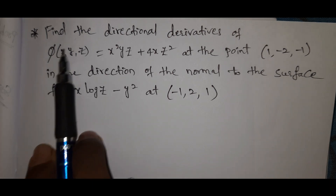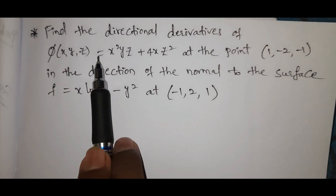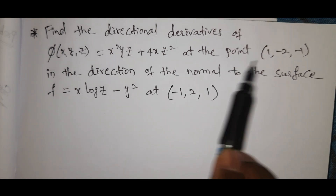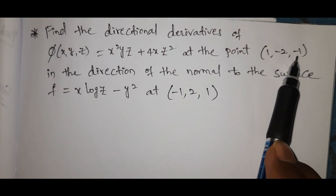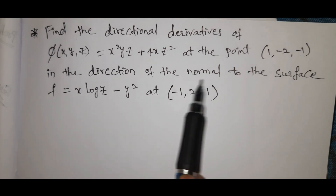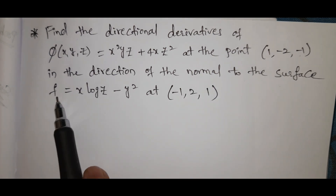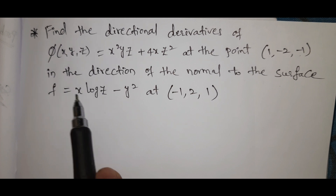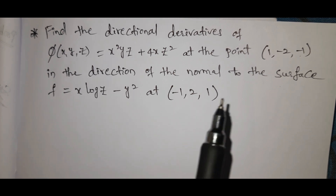Find the directional derivative of φ equal to x squared y z plus 4x z squared at the point (1, -2, -1), in the direction of the normal to the surface f(x, y, z) equal to x·log(z) minus y squared at point (-1, 2, 1).